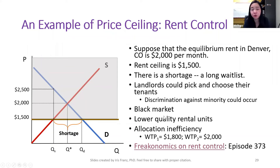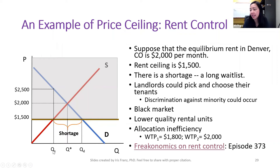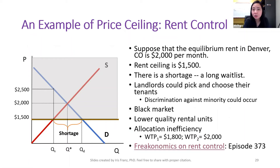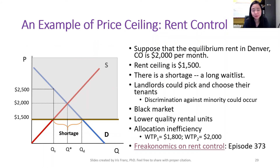Another issue of rent control is the black market. The demand curve reflects willingness to pay. Given the quantity QS being so low, you go back to your demand curve and you can see that tenants are willing and able to pay up to $2,500 for a rental unit given such a small quantity. So there could be landlords trying to make that kind of money — they tell their tenants: I have a unit, but if you want it you'll have to pay me cash and not tell anyone; you'll have to pay me $2,500. That's the black market, and that's another drawback of rent control.